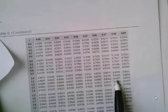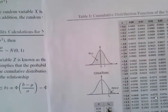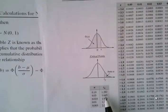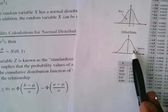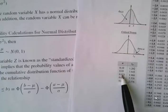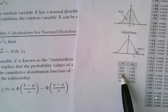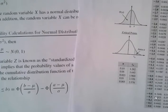Looking at 1.282 in the table: 1.28 gives a value between 0.8997 and 0.9015, so the area to the left of 0.9 corresponds to approximately 1.28. For alpha equals 0.025, the critical value is 1.96, meaning the area to the right is 0.025 and the area to the left is close to 0.975.